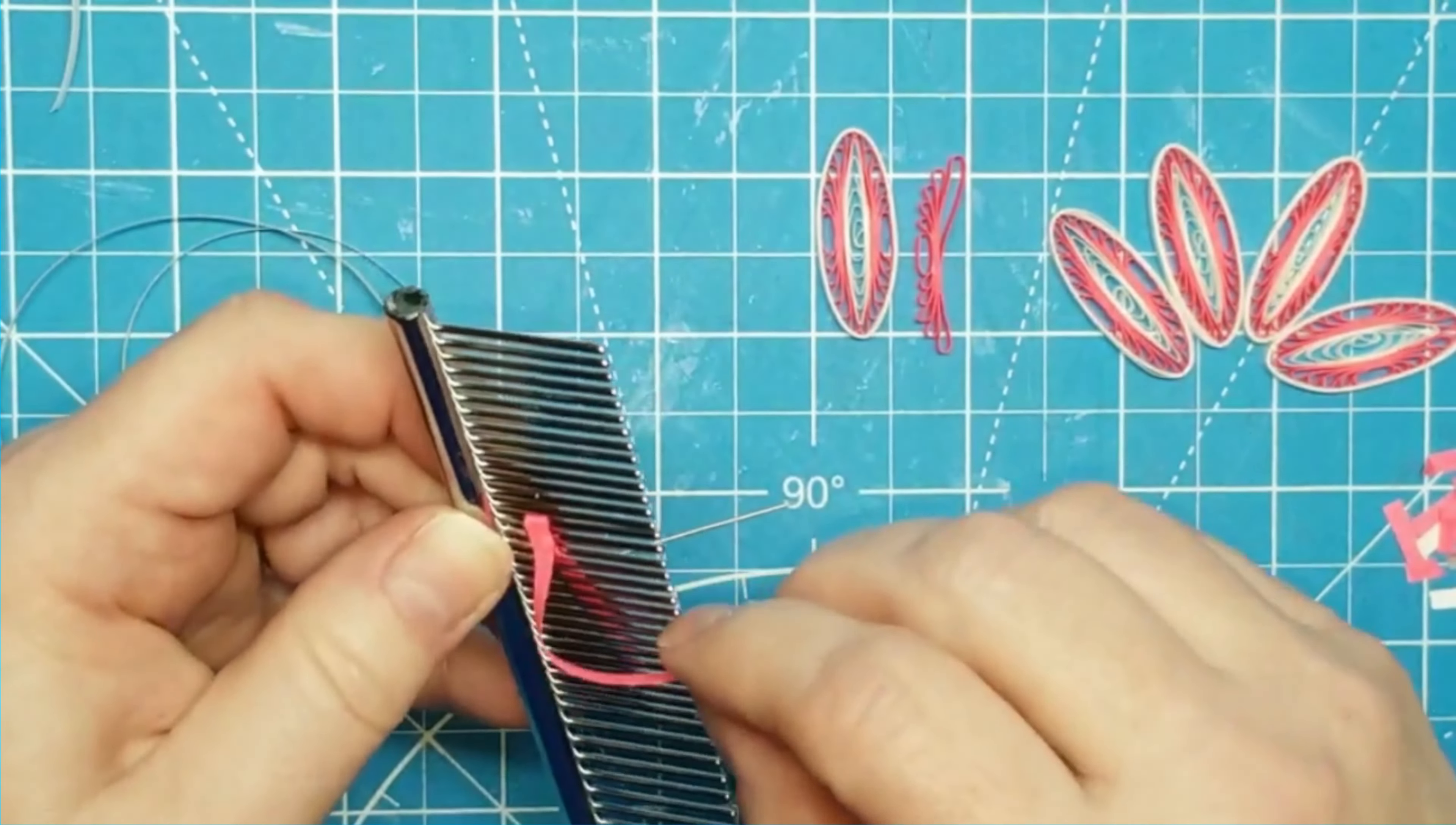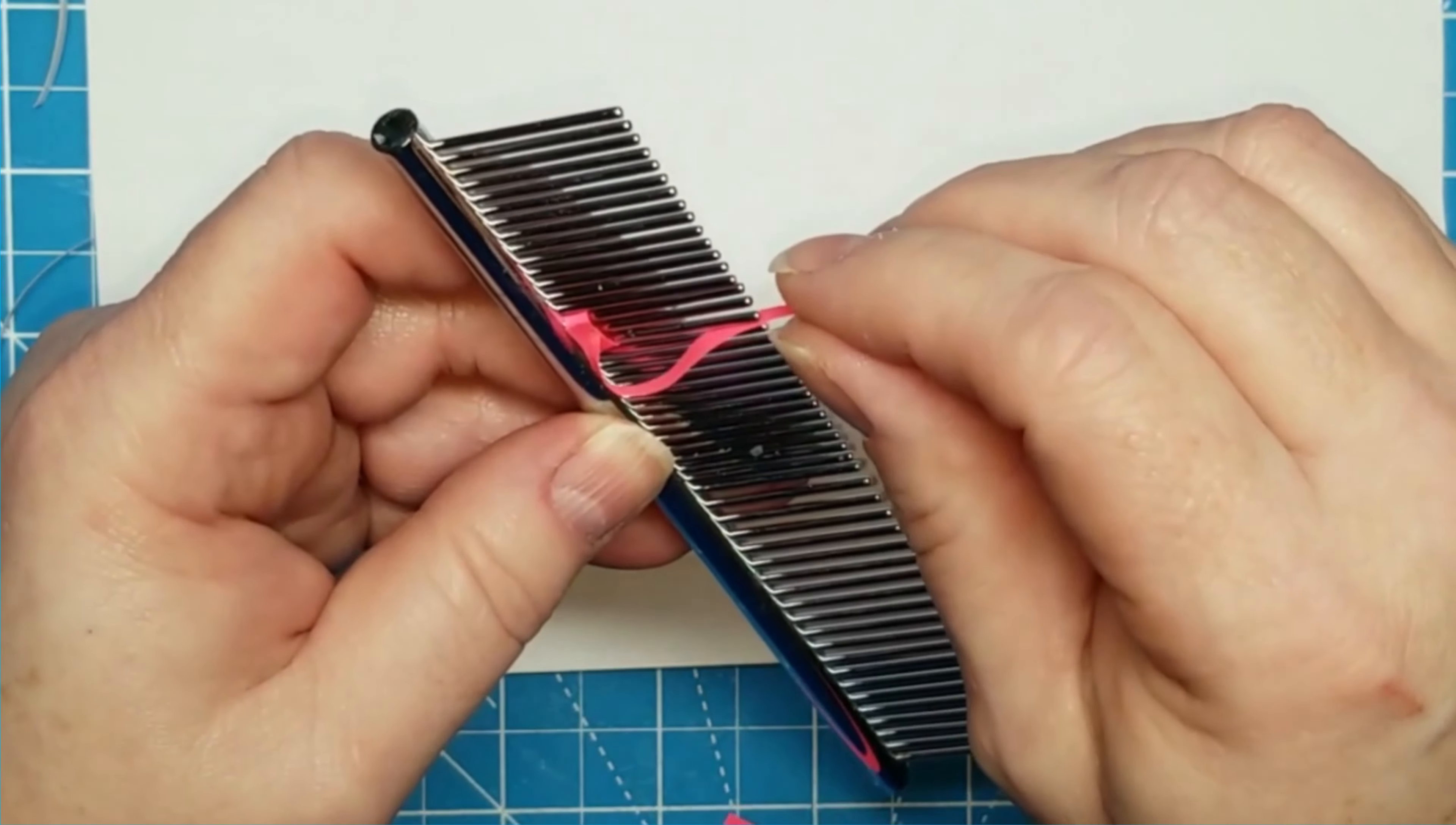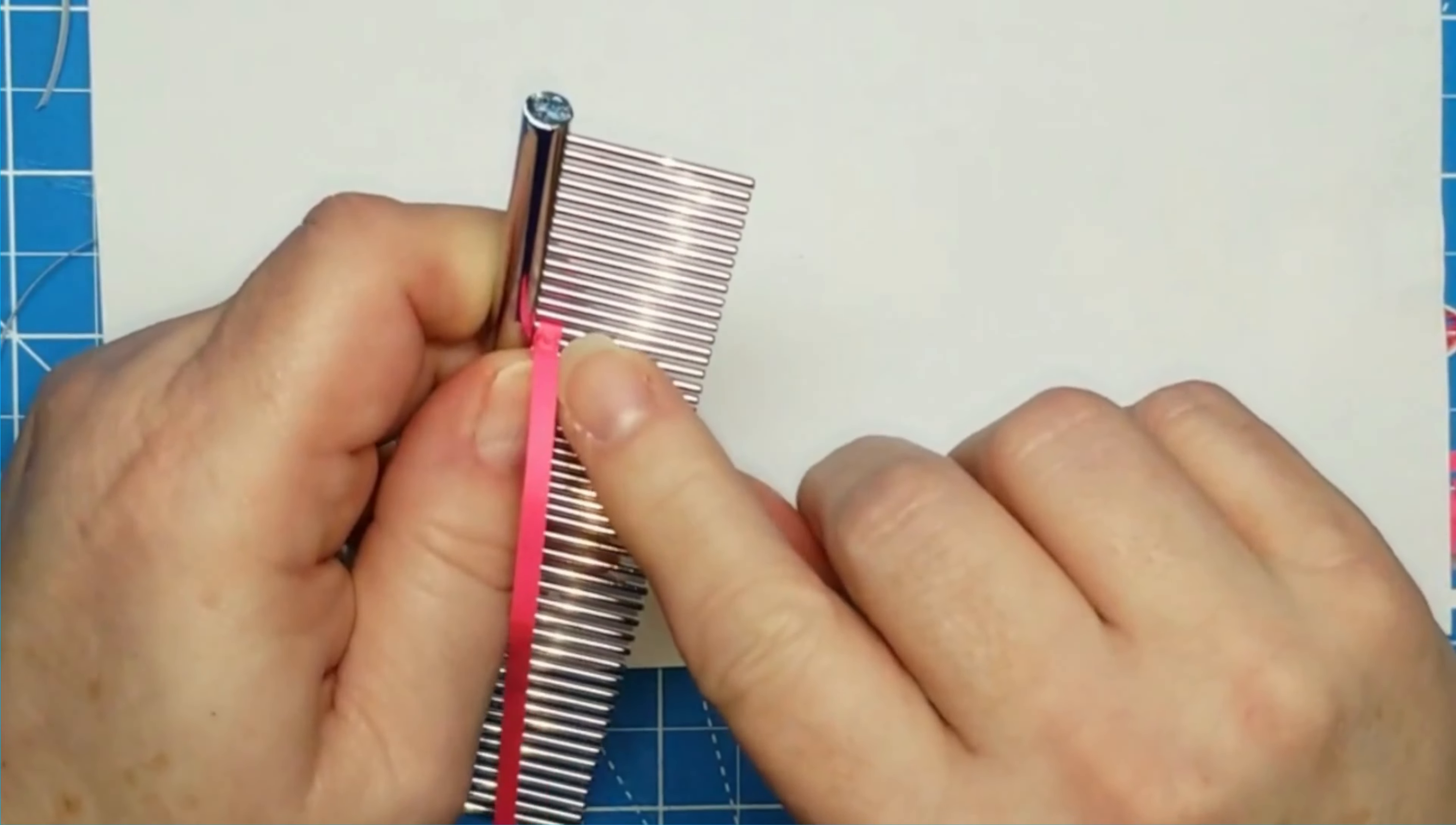Now we're going to go and wrap. I almost did the center one, the white one. So we're going to go back up through. You're going to go right up next to this edge of the one that you just glued down. Those are going to butt together. Then you're going to come up around the other side of it, and when you wrap back around, you're going to glue.